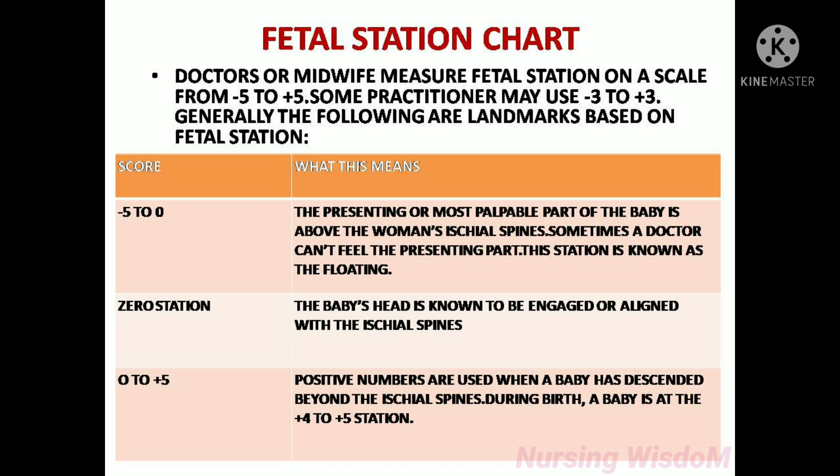On the fetal station chart, doctors or midwives measure fetal station on a scale from minus five to plus five; some practitioners may use minus three to plus three. From minus five to zero, the presenting part of the baby is above the woman's ischial spines. Sometimes a doctor can't feel the presenting part — this station is known as floating. Zero station means the baby's head is engaged or aligned with the ischial spines.